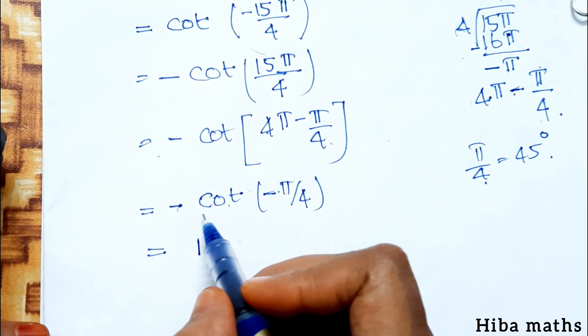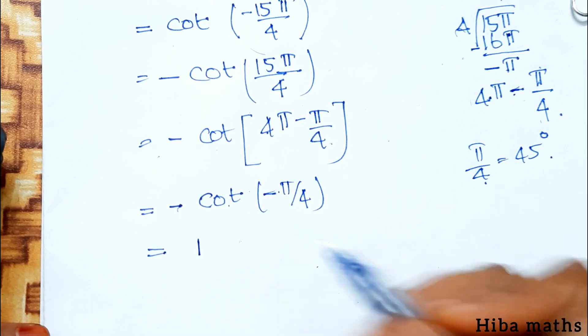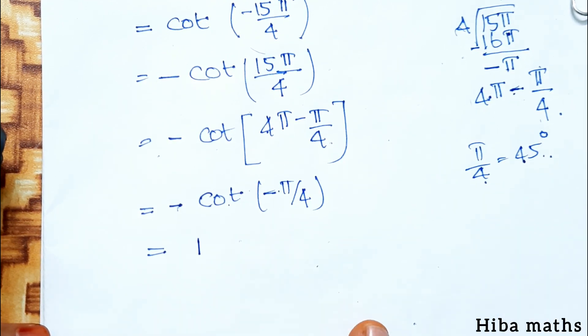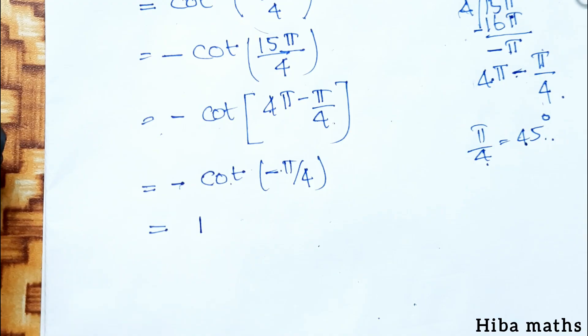Now cot pi by 4: pi by 4 equals 45 degree. Cot 45 degree equals 1. Understand? Thank you so much for watching.